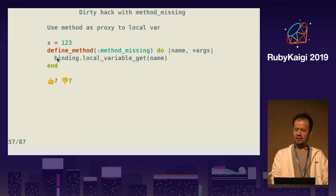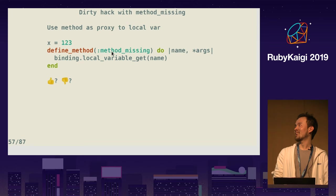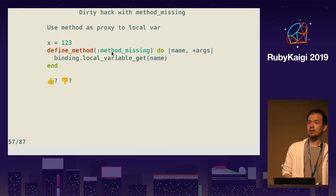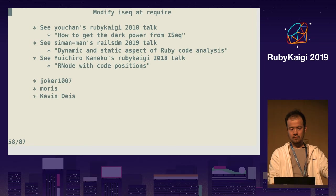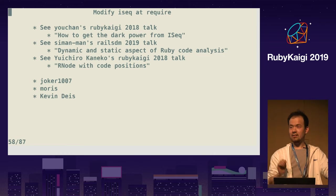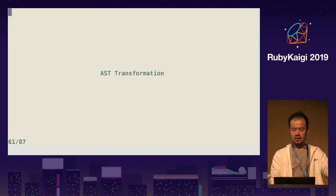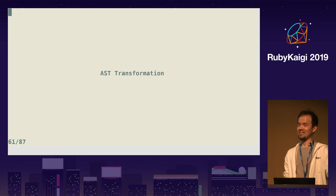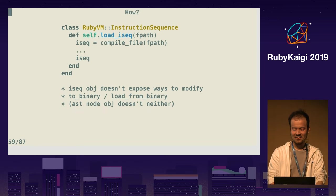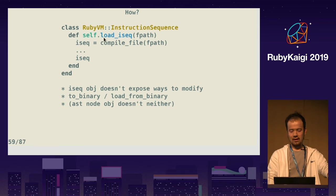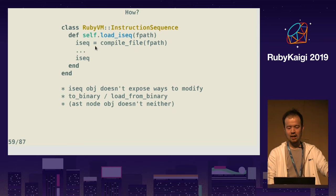But providing `method_missing` here is kind of messy — it's not a good way. I'm a good programmer, so let's think of an alternative. For finding an alternative, there are many hints. One is just AST transformation.